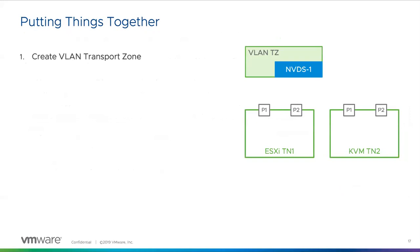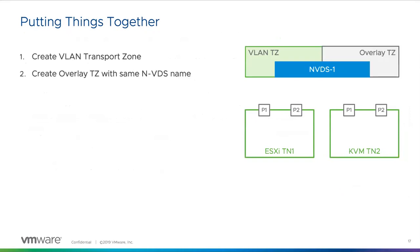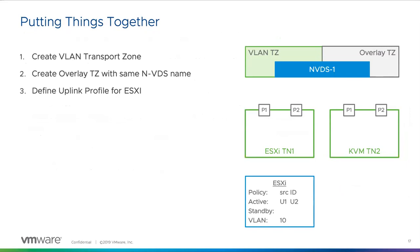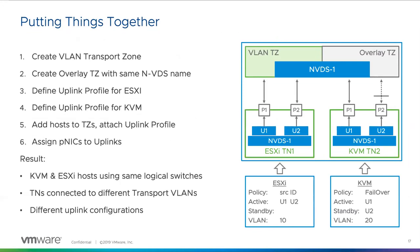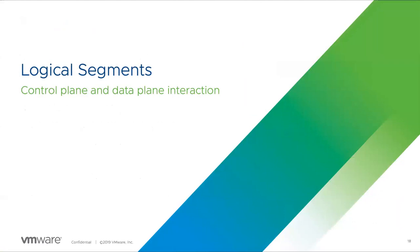Putting things together: when you layer all this in, you create a VLAN transport zone, create the overlay transport zone, define the uplink profile for ESXi and for KVM if you're using KVM, add hosts to the transport zones, attach the uplink profile, and assign your physical NICs to the uplinks. The result is hosts using the same logical switches, transport nodes connected to different transport VLANs, using different uplink configurations — all across two different hypervisors — but they get the same capabilities.